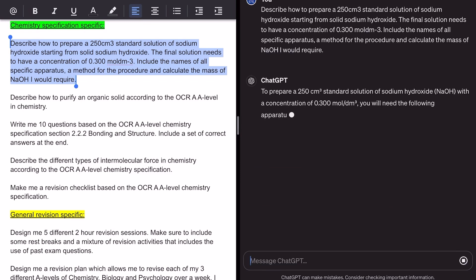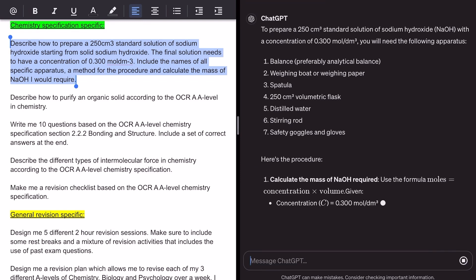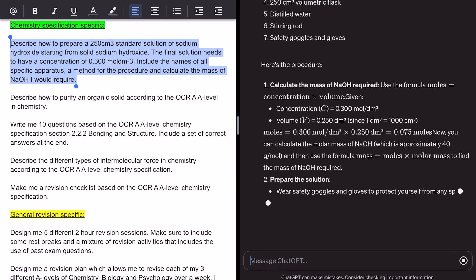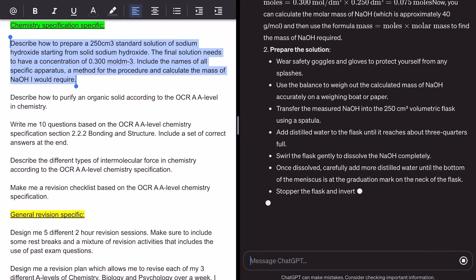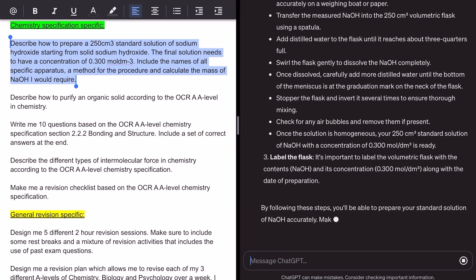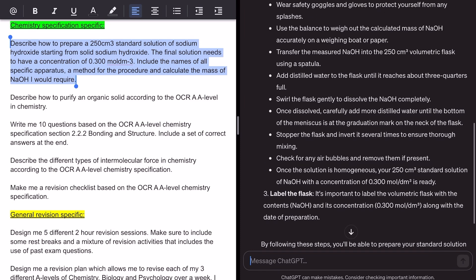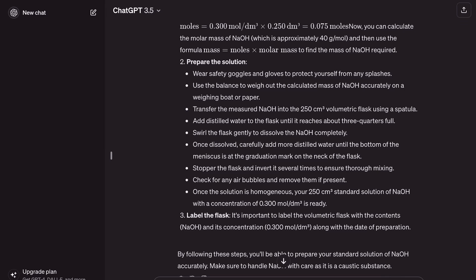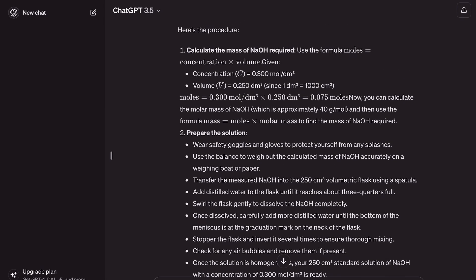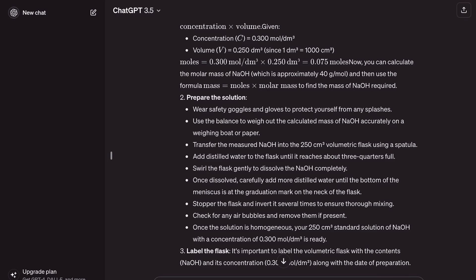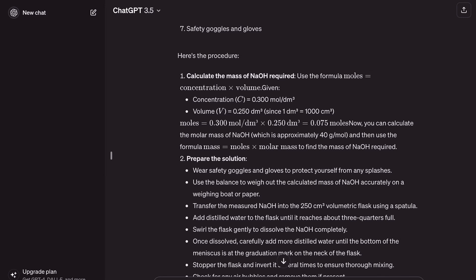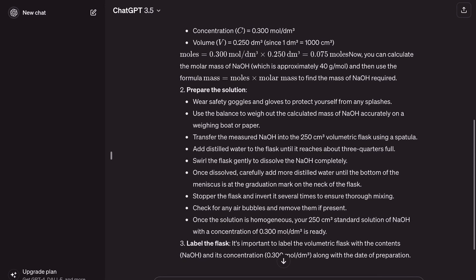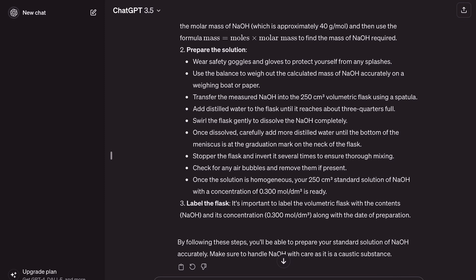So here we go. It's giving us lots of information. Excellent, we've actually got a nice list of apparatus, including a very important 250 centimeter cubed volumetric flask. That's really good. And we've got a pretty decent method. This is not bad. Let's have a quick look through what we've got. If they've done the calculation right, it should be three grams. Now, I can't see any actual mass that they are suggesting here. That's a little disappointing, but they have given a description of how I would need to do the calculation. So that's pretty good. They've also almost made it a little challenge for us.